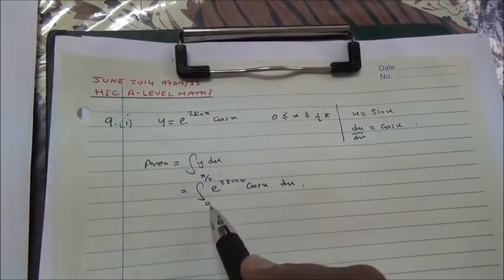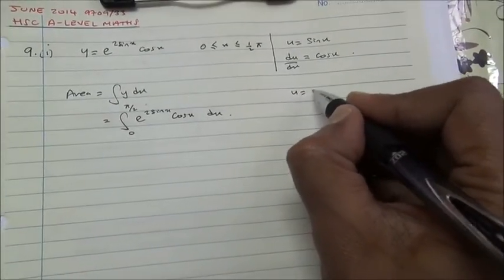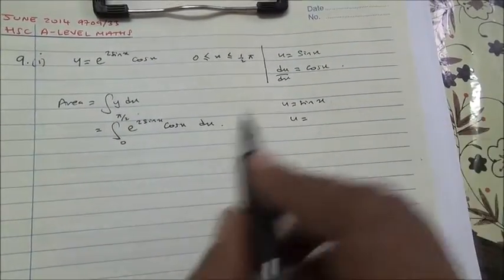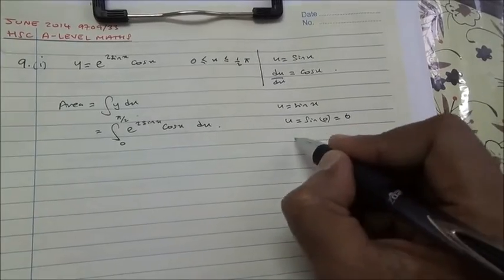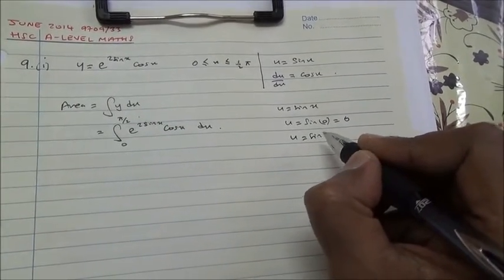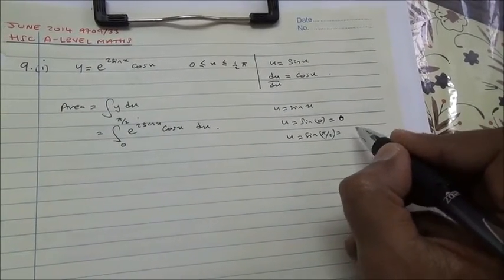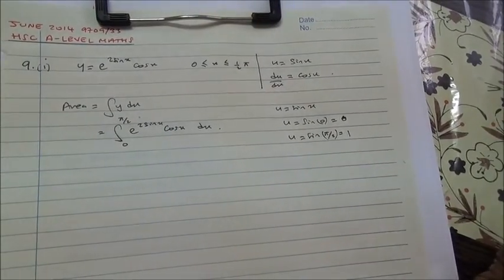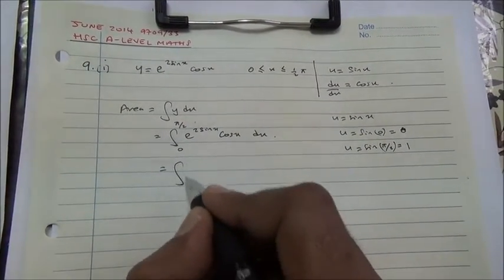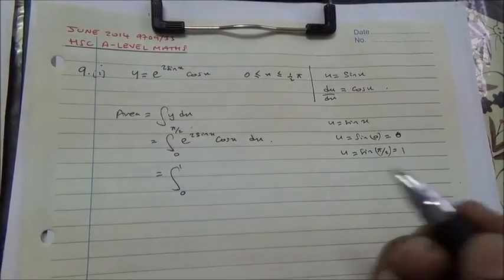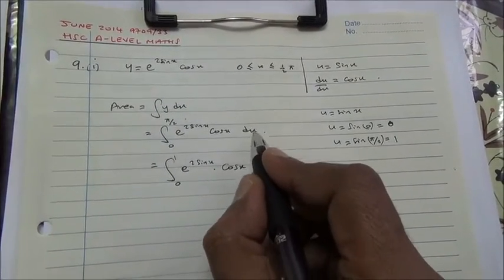Finding the new limits: since u = sin x, when x = 0, u = sin 0 = 0; and when x = π/2, u = sin(π/2) = 1. So the area becomes the integral from 0 to 1 of e to the 2 sin x times cos x dx.